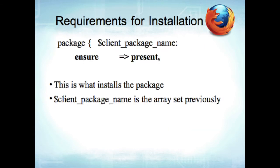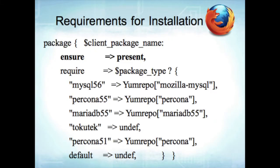To be safe, we want to require the repo — this is setup work before actually installing the package, but if you don't do this, you'll never get the package installed. The package of client_package_name is ensured present — 'ensure => present' within the package block is what installs the package. client_package_name is the array we set previously with the client packages. This is what actually installs those client shared libraries. And then we want to require the repo — it's not only realized, but we make sure it's there before continuing. Never assume ordering, especially in Puppet.